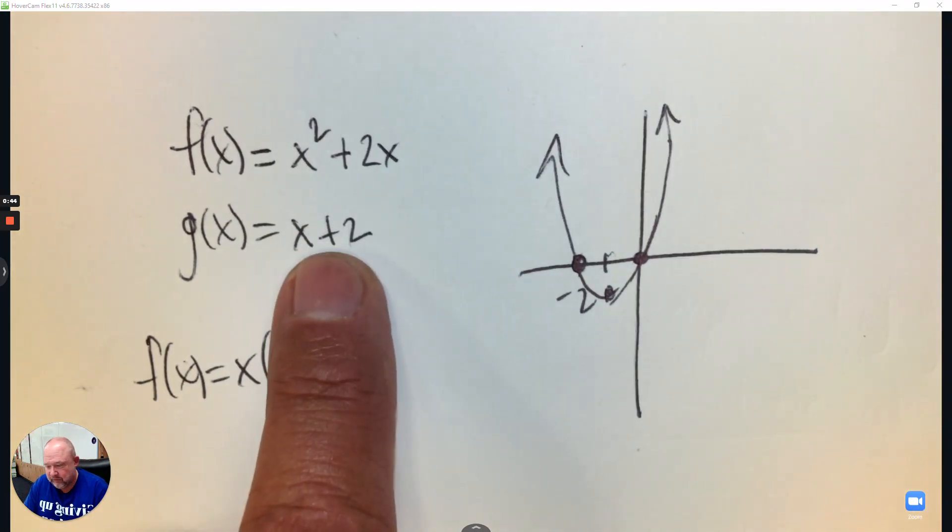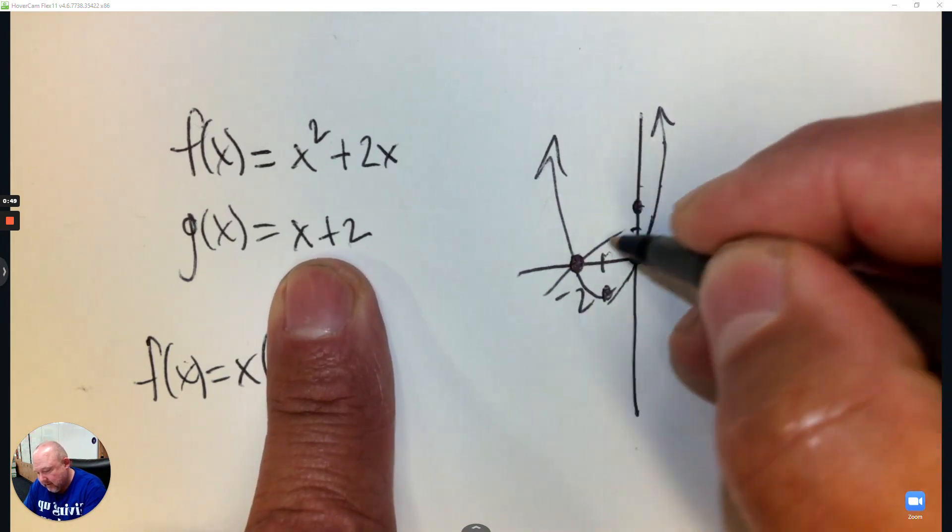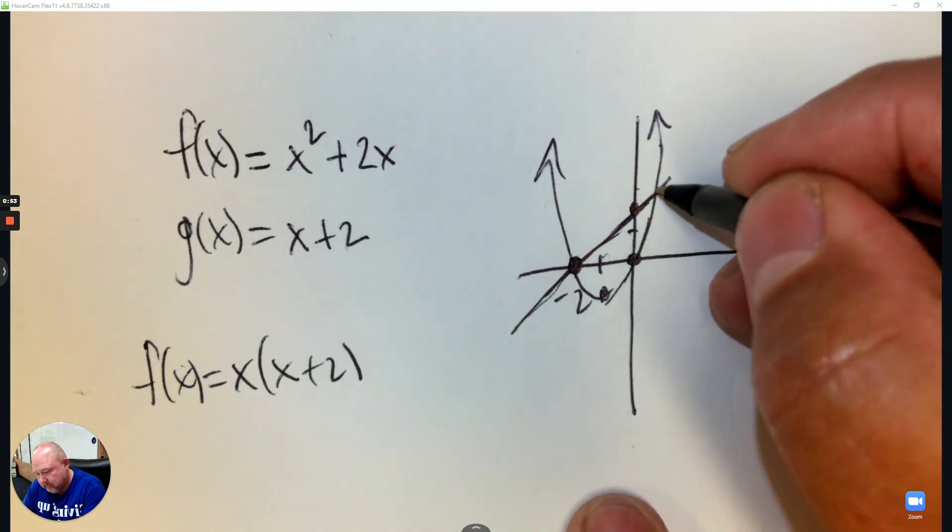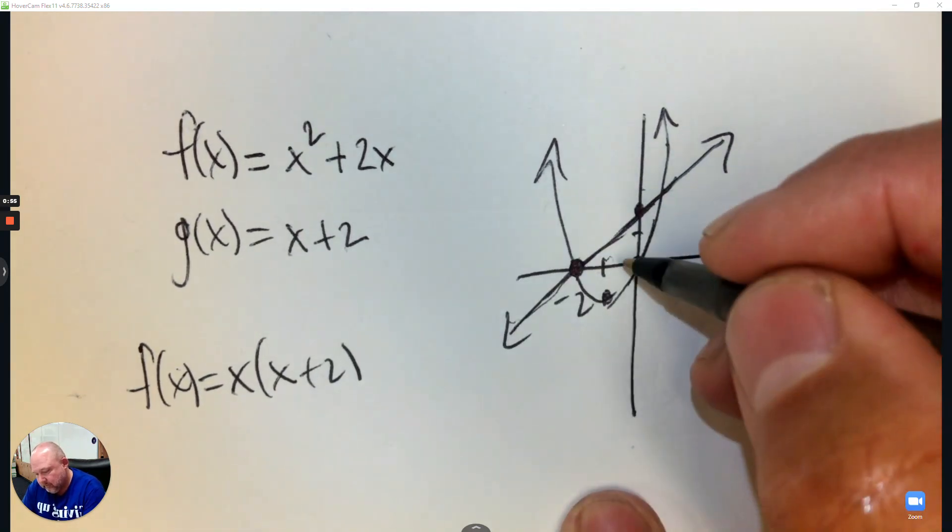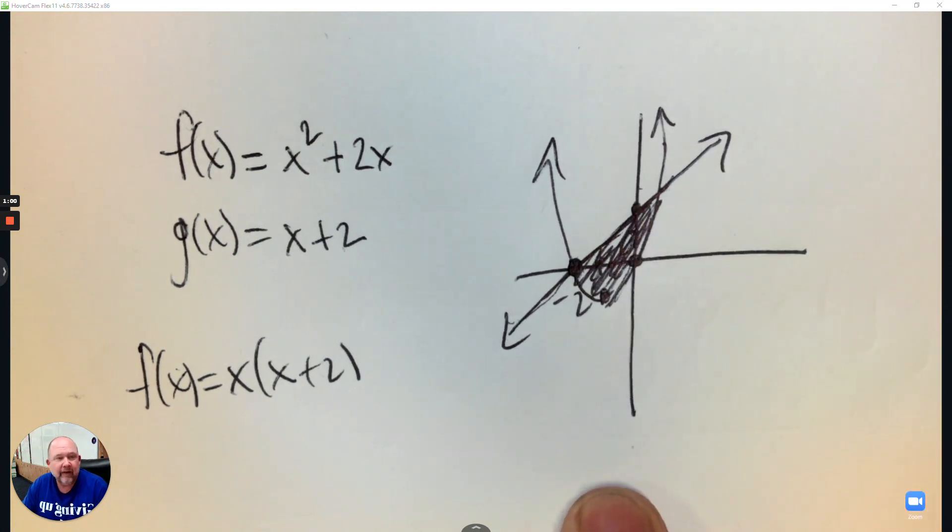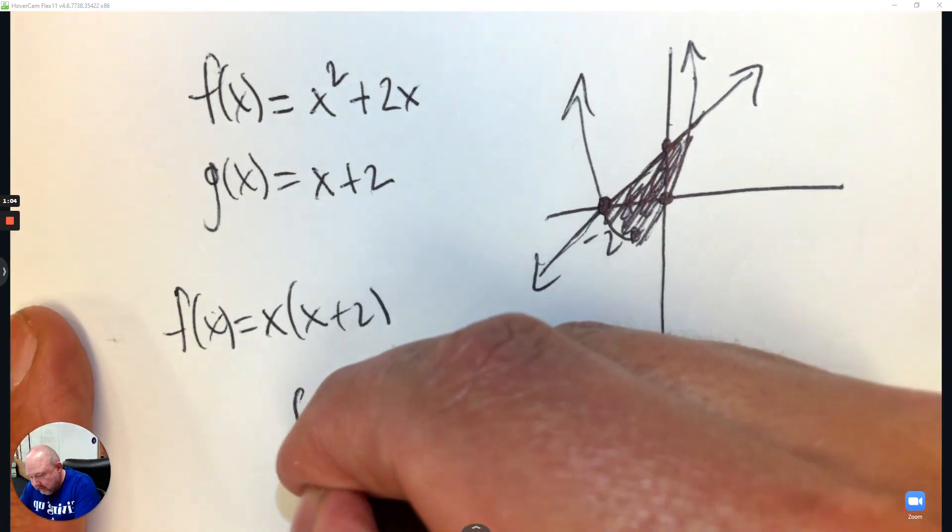The second one is x plus 2. So I'm going to start at 2. And I'm going to go up 1 and to the right 1. And I'm going to draw a line. And I want to find that area.